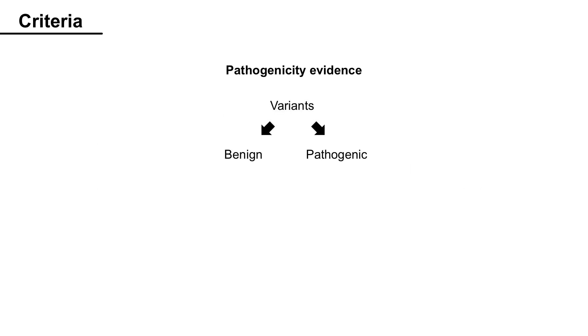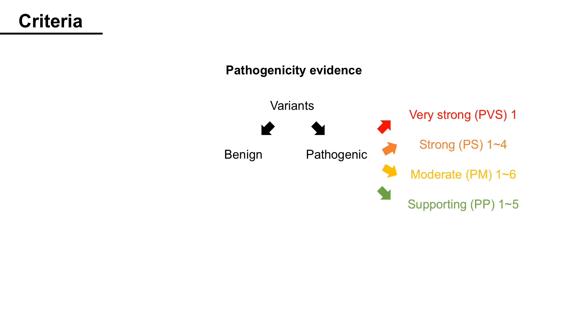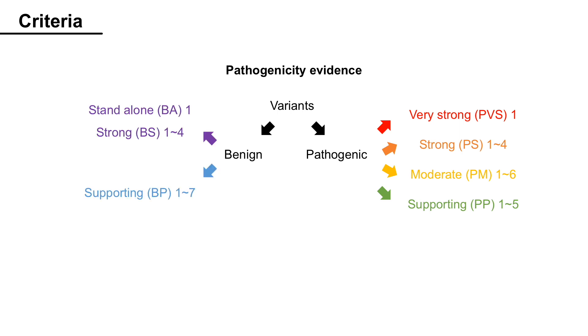First, criteria for pathogenicity evidence. There are two types of evidence: pathogenic and benign. There are four classes of strengths for pathogenic evidence: one very strong, four strong, six moderate, and five supporting evidence. Also, there are three classes of strengths for benign evidence: one standalone, four strong, and seven supporting evidence.